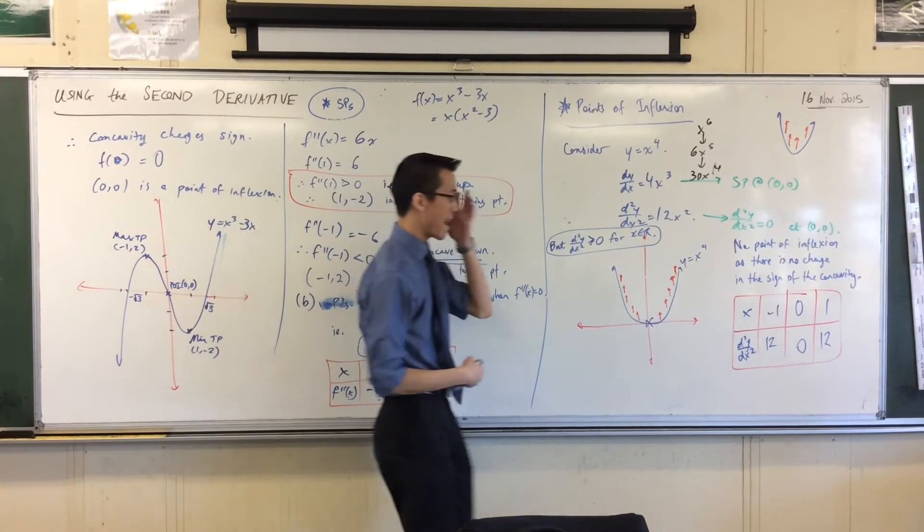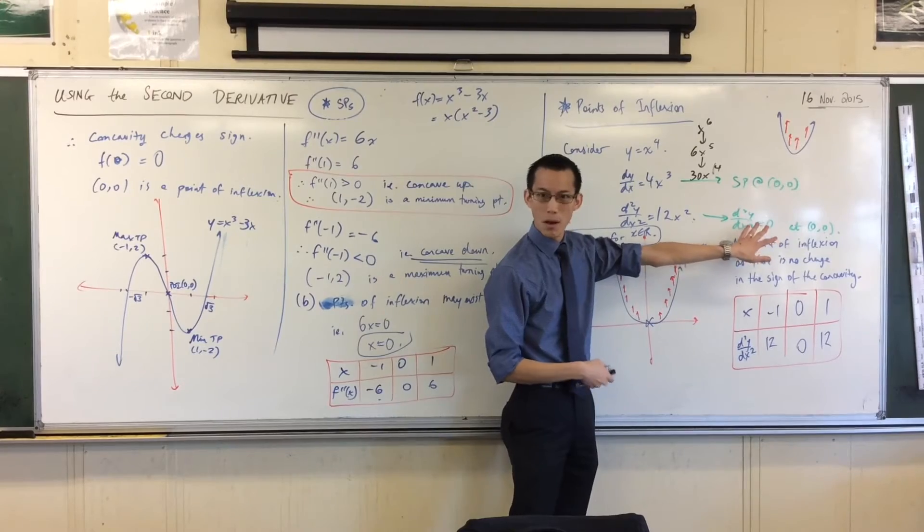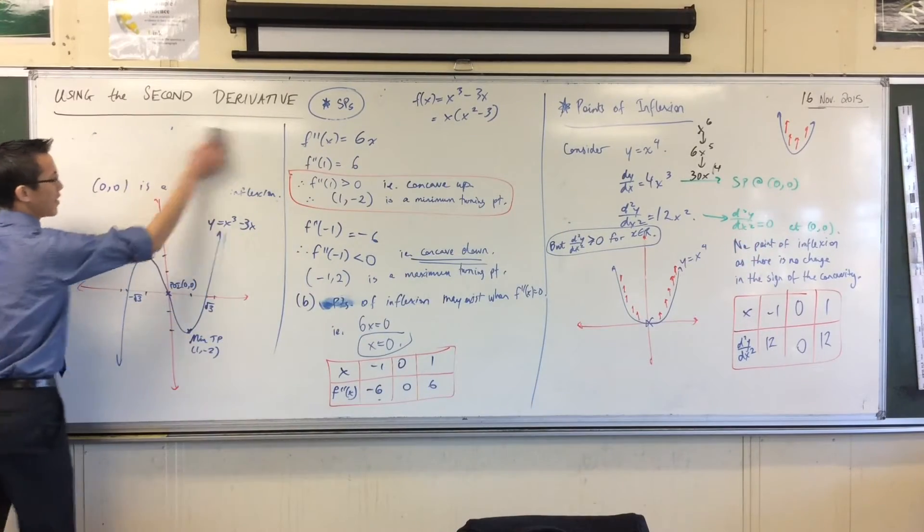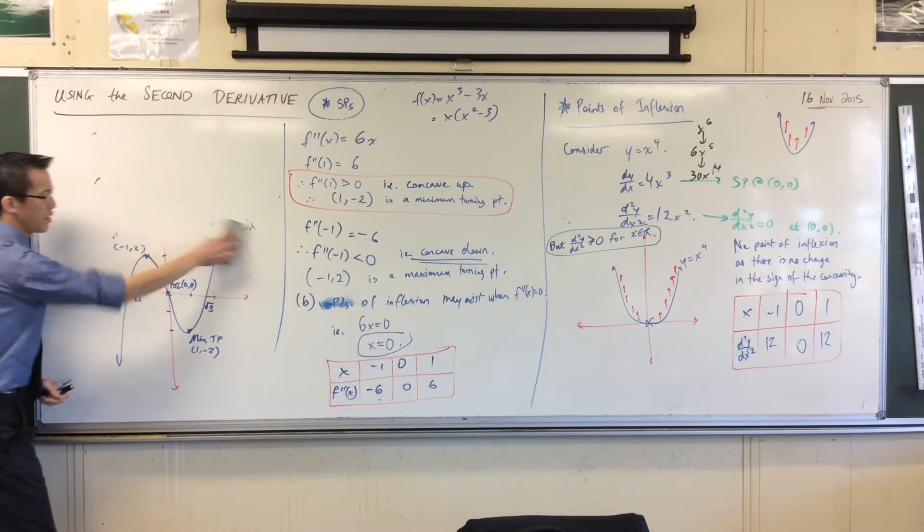So this is my example of where you get it equal to 0 but it's not a point of inflection. The last example is one again which you already know but I wanted to point out to you.